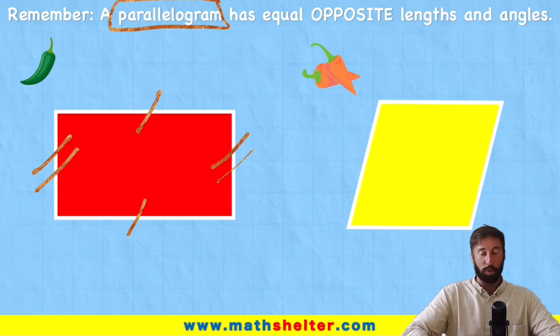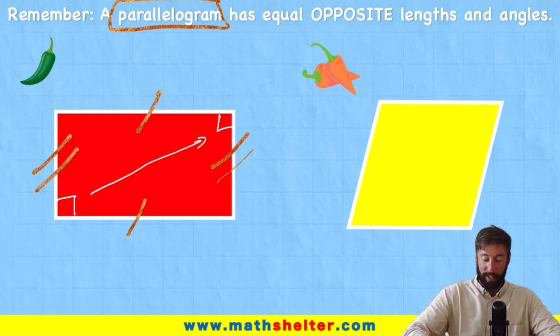But it also means that the angles are the same on the opposite corner. So I can see I have a 90 degree angle here and a 90 degree angle here. So they're the same. But I also have a 90 here and a 90 here and they're the same.